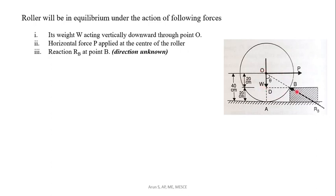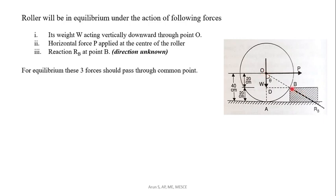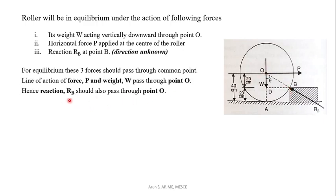For three forces in equilibrium, their lines of action must meet at a common point. Here, W is passing through point O and P is passing through point O as well. Therefore the reaction RB must also pass through O. So RB acts along the line OB, and the reaction RB should also pass through O. So line OB gives the direction of reaction RB, and the angle is theta.